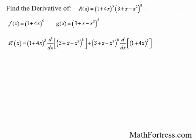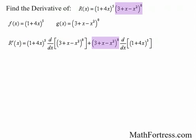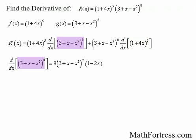The product rule says we take the derivative of the first function times the second function plus the second function times the derivative of the first function. Notice that in order to take the derivative of the functions, we actually need to apply the chain rule. The outer function is x to the power of 8 and the inner function is 3 plus x minus x squared. Applying the chain rule, we have the derivative equal to 8 times the quantity 3 plus x minus x squared raised to the power of 7 times the quantity 1 minus 2x.